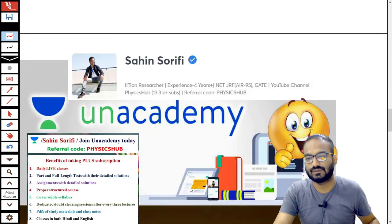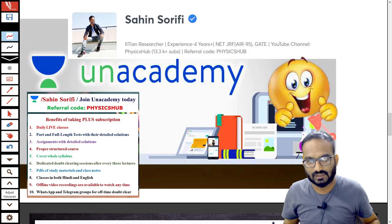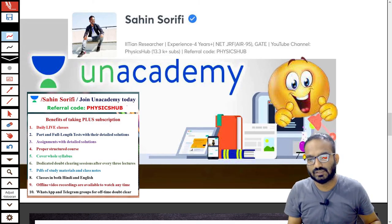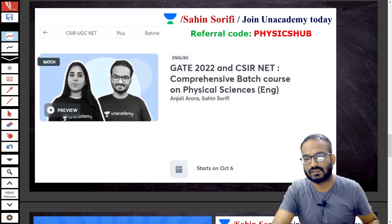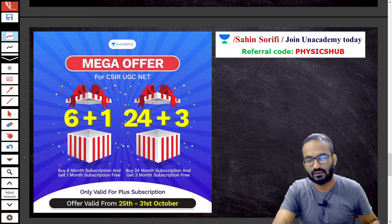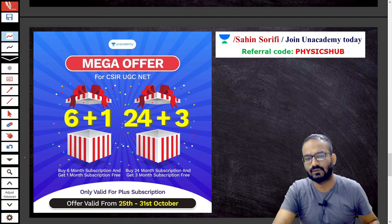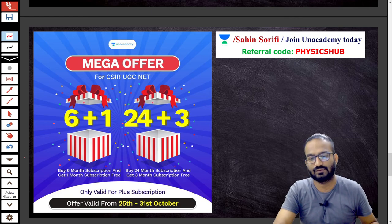Before I end the video, let me tell you this. Guys, you can have your CSIR NET physical science preparation on Unacademy. If you take an Unacademy Plus subscription using the referral code PHYSICSHUB, you get a lot of benefits. Some of the benefits have been listed here. You can pause and read it. And guys, this batch course is currently ongoing. You can enroll for this course. And this mega offer is also going on. You can take this subscription for 6 or 24 months and you will get respectively one month and three months extra if you take it by 31st of October.